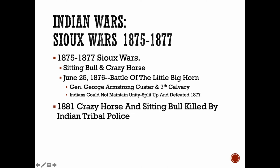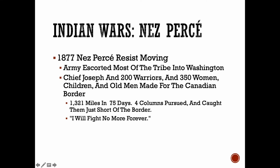A few years later, in 1881, both Crazy Horse and Sitting Bull were killed by other Native Americans who were tribal police. Another famous incident is the Nez Perce War. The Nez Perce resisted moving, so Chief Joseph and about 500 others left and were trying to meet up with Sitting Bull, who was up in Canada at the time. They made their way but were about 40 miles short of the border when they had to give up. That's when Joseph made his famous statement that he would fight no more forever.